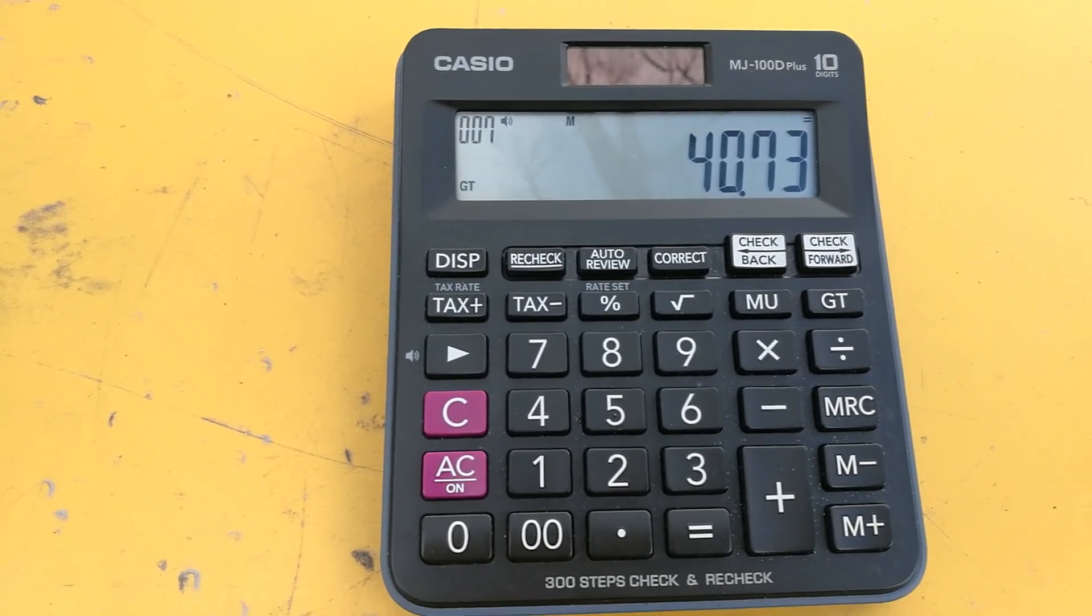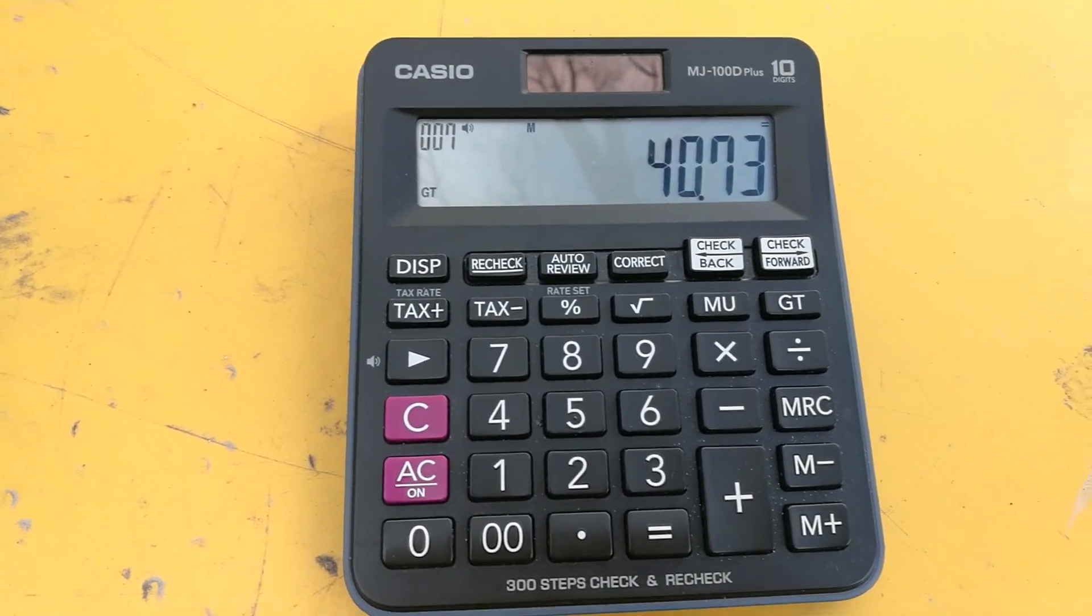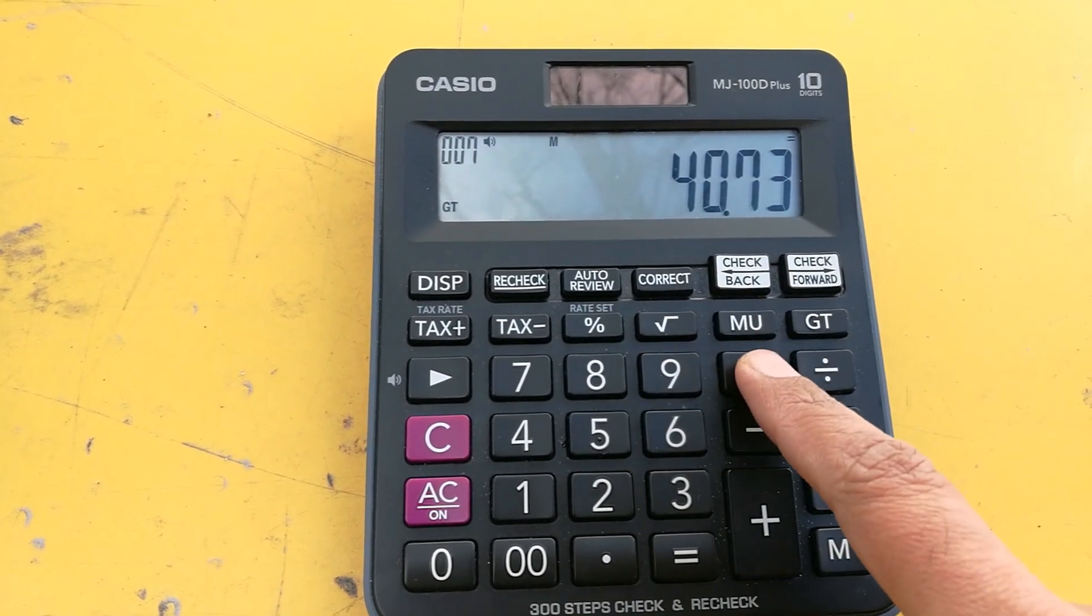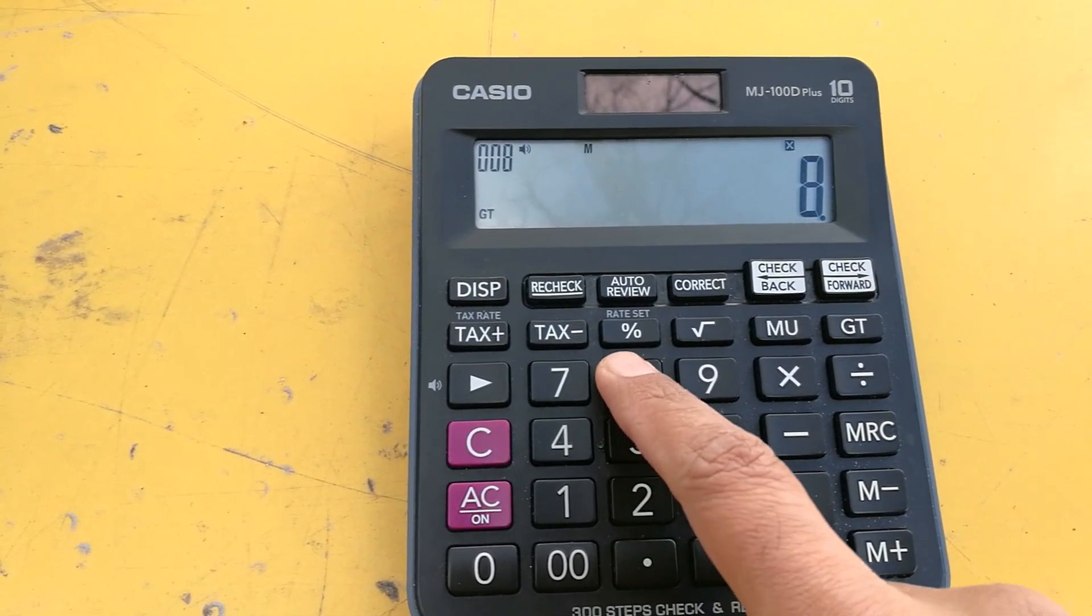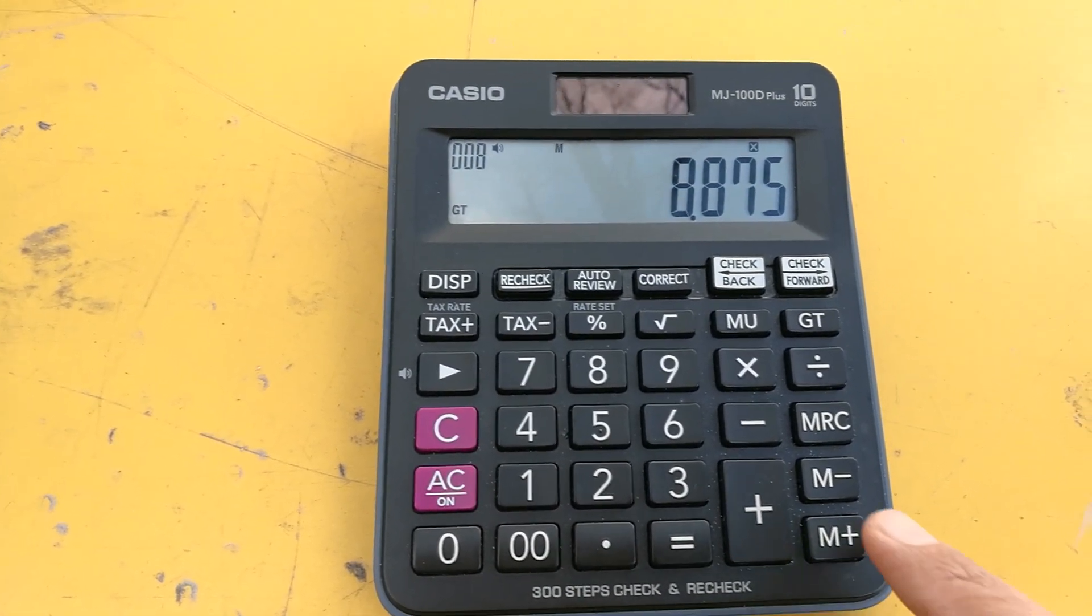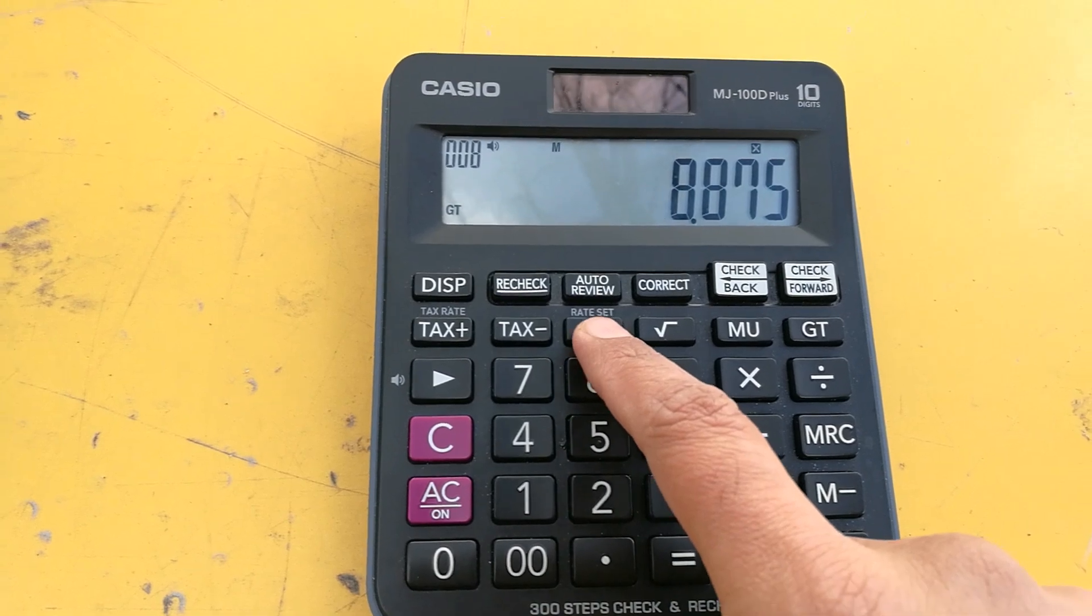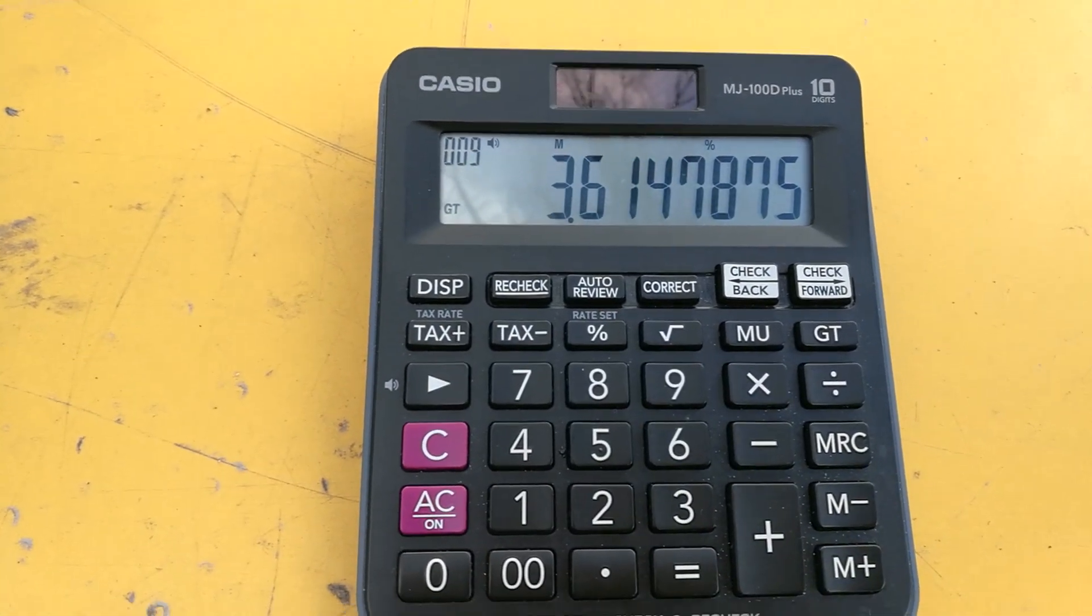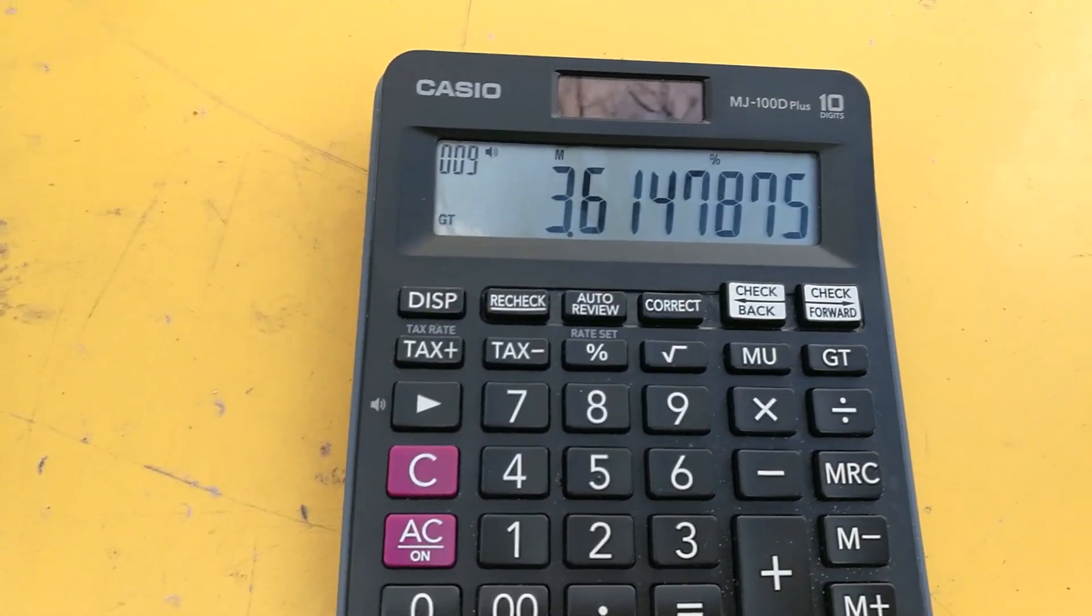So what we will do now, we have the total in front of us. We will multiply this amount, 40.73, with 8.875. When we multiply it and then we press the percentage button...